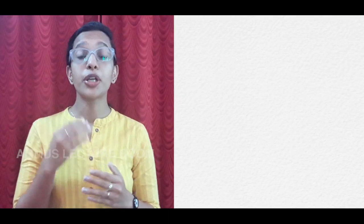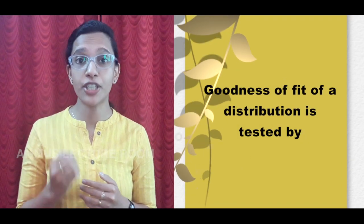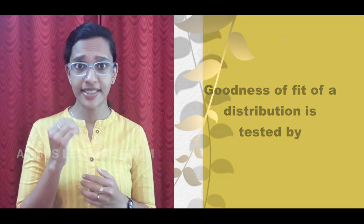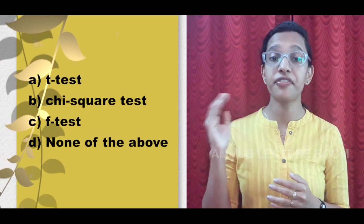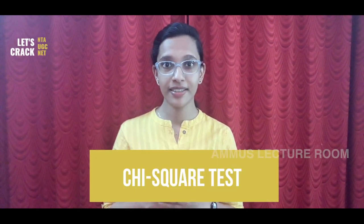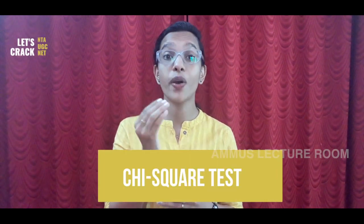In the 5th year, we will discuss Business Statistics and Research Methodology. This topic is tested by t-test, chi-square test, f-test, or none of the above. The goodness-of-fit test is called chi-square test.